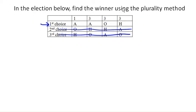So notice here that A got four first choice votes, one here and three here. O here got three first choice votes. And Hawaii got three first choice votes. And so the winner under plurality method is A.